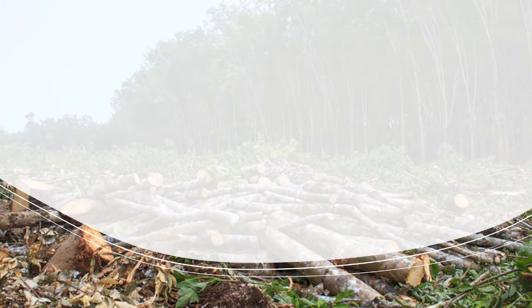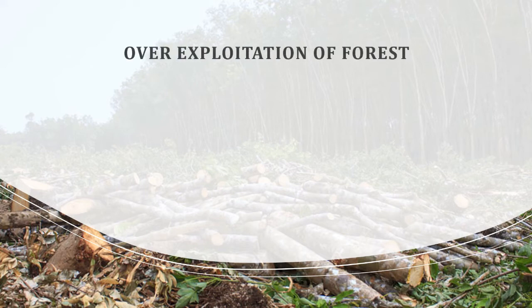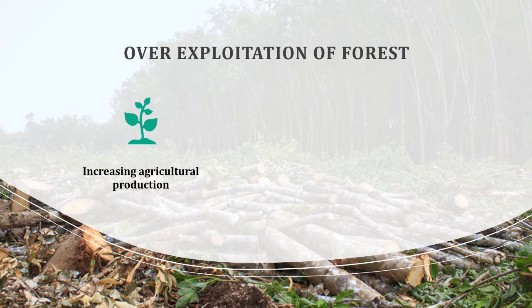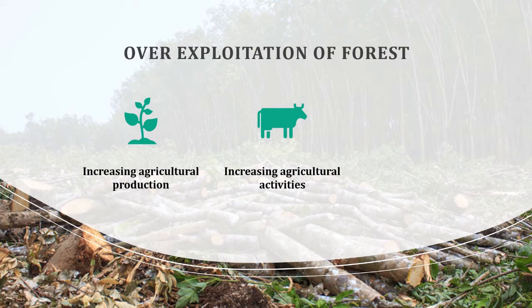In India, the minimum area of forest required to maintain good ecological balance is about 33% of total area. Over-exploitation of forest material occurs due to over-exploitation and over-population. There is an increased demand for medicine, shelter, wood, and fuel. Hence, exploitation of forest material is going on increasing. Increasing agricultural activities and the increase in demand for food resources are the main reasons for over-exploitation of forest.